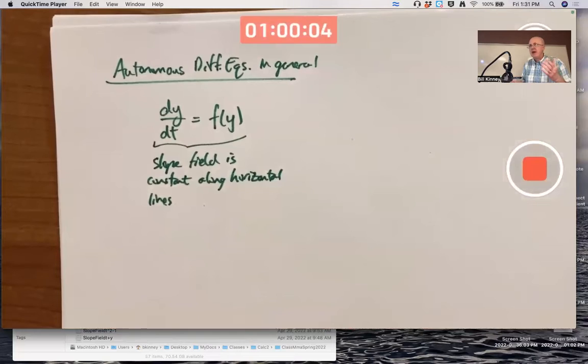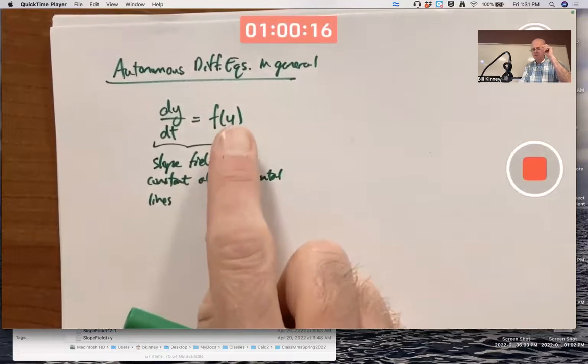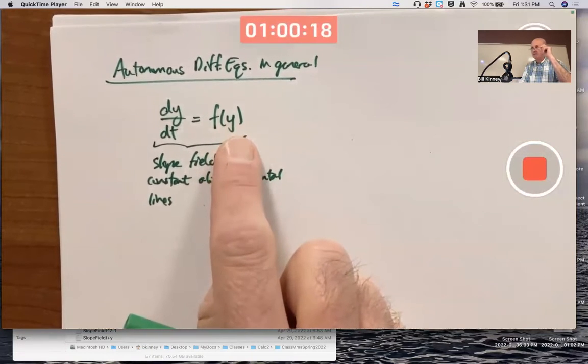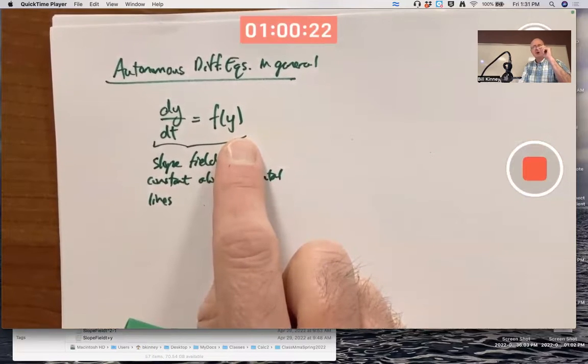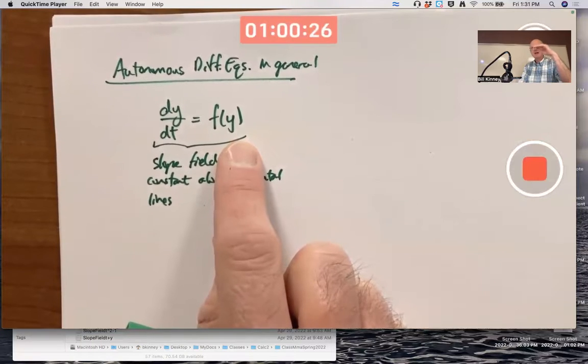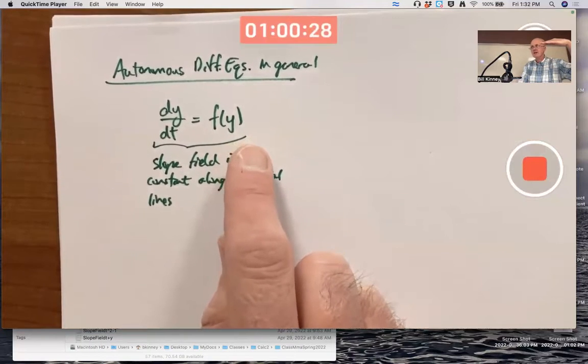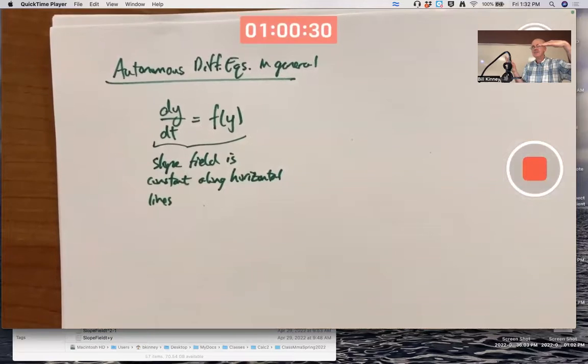Remember how slope fields are made. Think with me here. So t is horizontal, y is vertical. At each point in the ty plane, you plot a little line segment with slope given by what you get when you plug the point (t, y) into the right-hand side. But if that only depends on y, no t's...